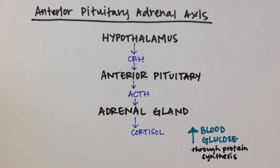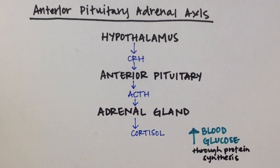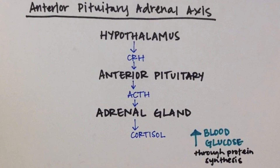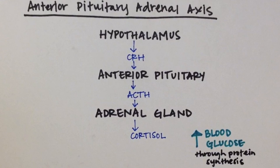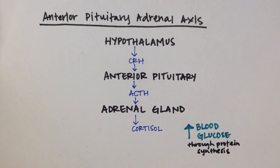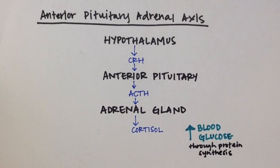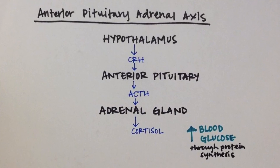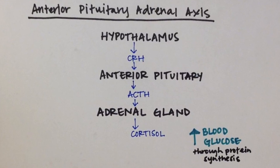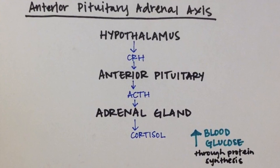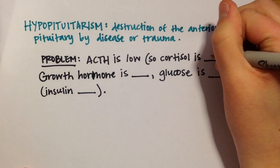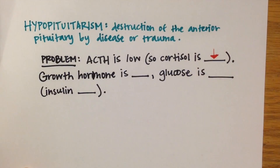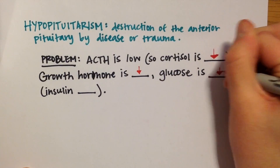Because the anterior pituitary is destroyed, growth hormone would not be produced, and glucose levels would be low because of the low levels of both growth hormone and cortisol. And in turn, the low levels of glucose prevent insulin secretion from being stimulated. Therefore, growth hormone, ACTH, cortisol, glucose, and insulin levels would all be low.